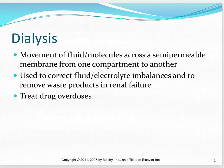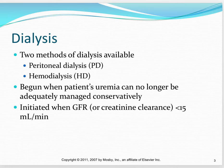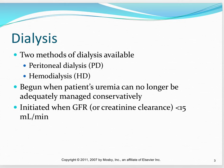Dialysis is used to correct fluid and electrolyte imbalances, to remove waste products, and it can be used to treat drug overdoses. There are two methods of dialysis: peritoneal dialysis and hemodialysis. Dialysis is indicated when the patient's uremia can no longer be adequately managed conservatively, or the glomerular filtration rate is less than 15, meaning that filter is just too packed and no longer working.